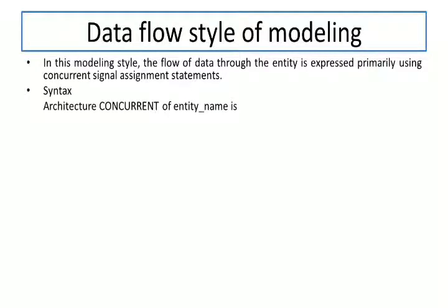To define data flow style, we write 'architecture concurrent of entity_name' — the name 'concurrent' is used because we are dealing with concurrent statements. Then we write 'begin', add the concurrent statements, and close with 'end concurrent'. Note that writing 'end architecture' is also acceptable. This is the simple syntax for defining the data flow style of modeling.